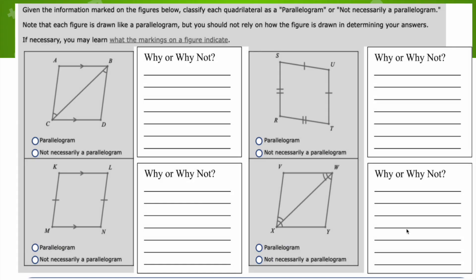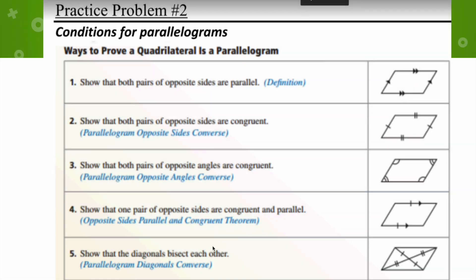Let's look at four examples. Using the given information marked on each figure, classify each quadrilateral as a parallelogram or not necessarily a parallelogram. Note that each figure is drawn like a parallelogram, but you should not rely on how the figure is drawn. Don't just look at it and say it looks like a parallelogram — they all do. You need to look at the markings and use those five properties to determine whether it's a parallelogram.